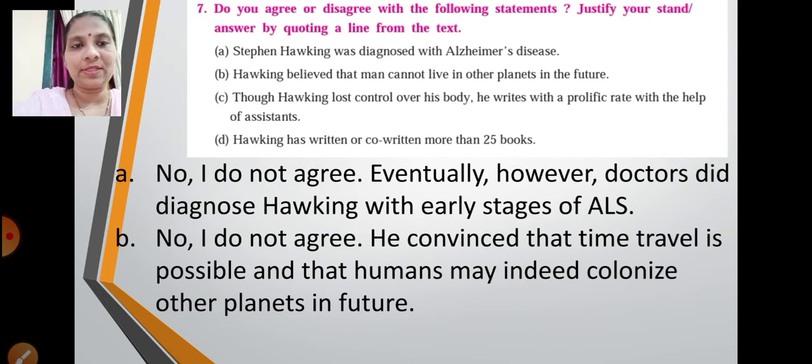Stephen Hawking was diagnosed with Alzheimer's disease. We already know that it is a strong statement. So no, I do not agree. Eventually, however, doctors did diagnose Hawking with early stages of ALS. So that eventually however doctors part of the sentence is taken from the text.